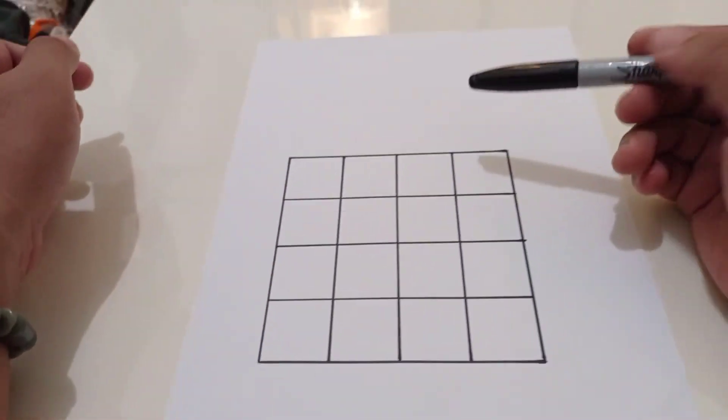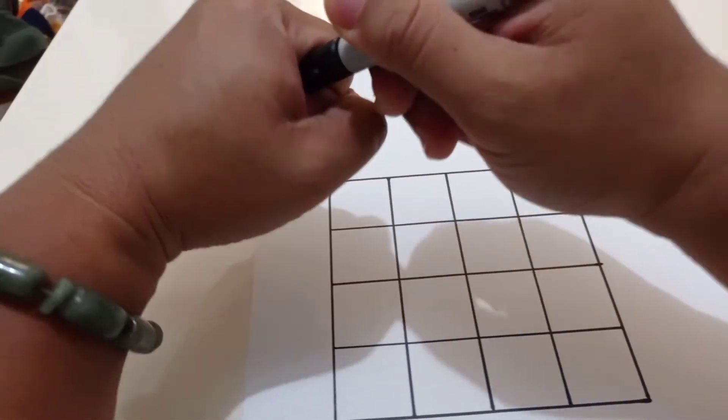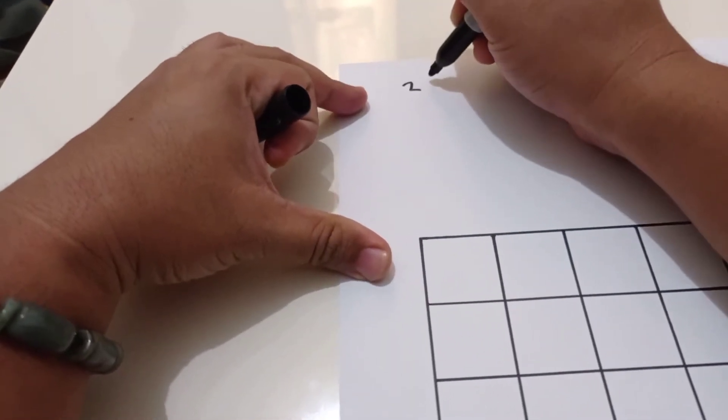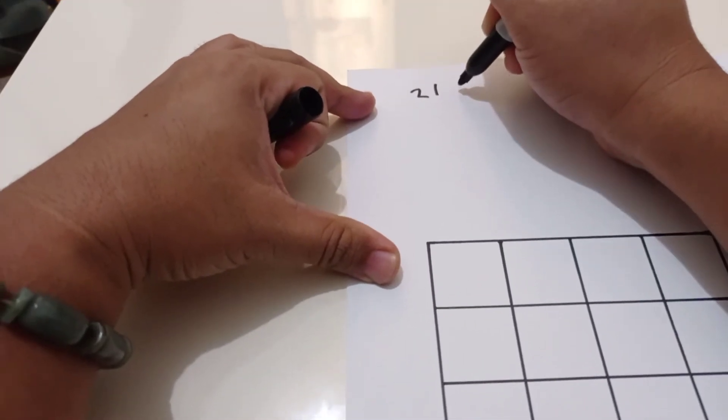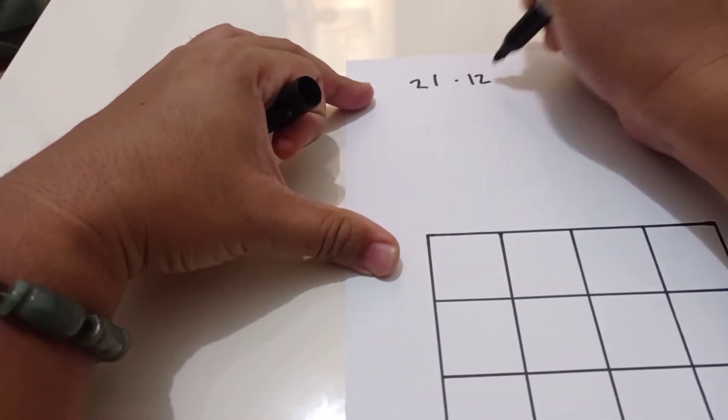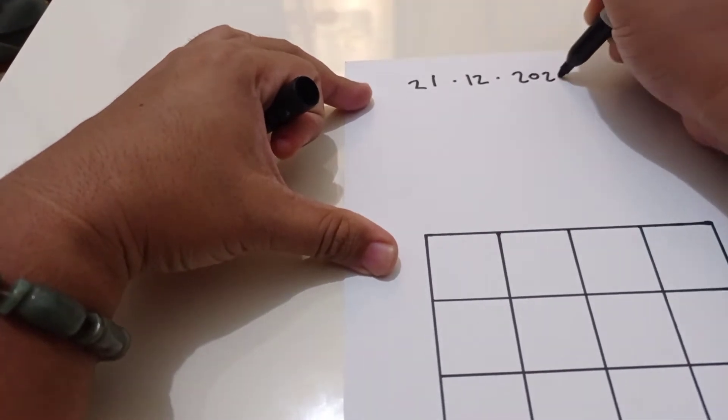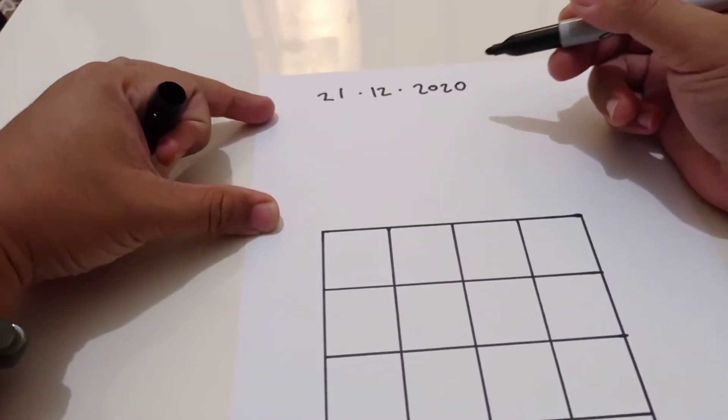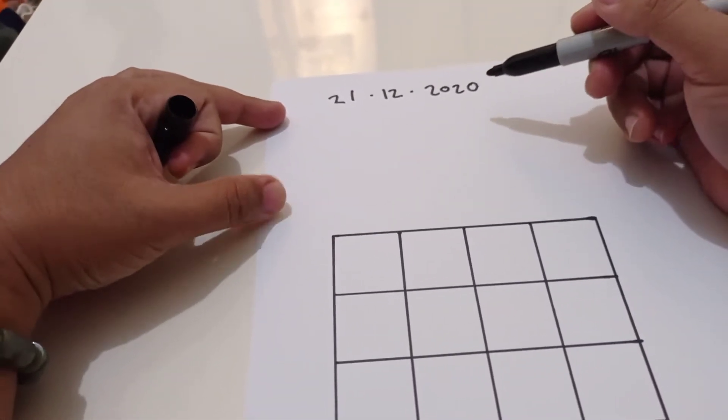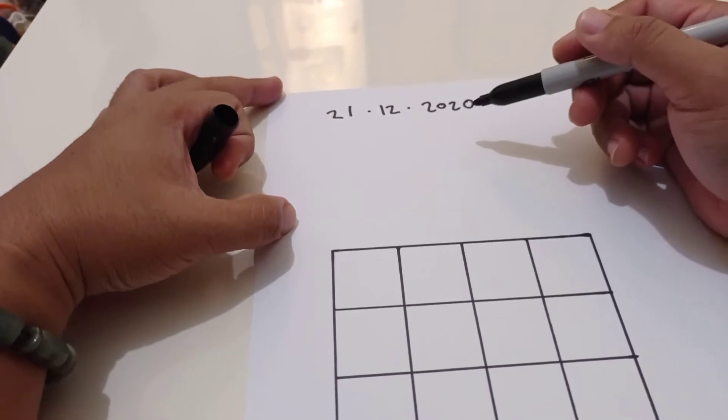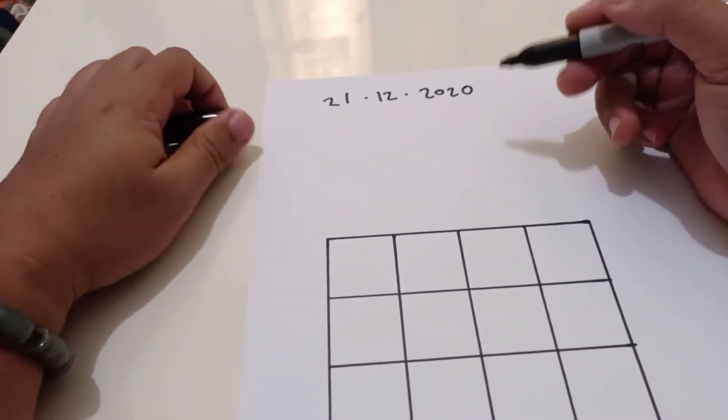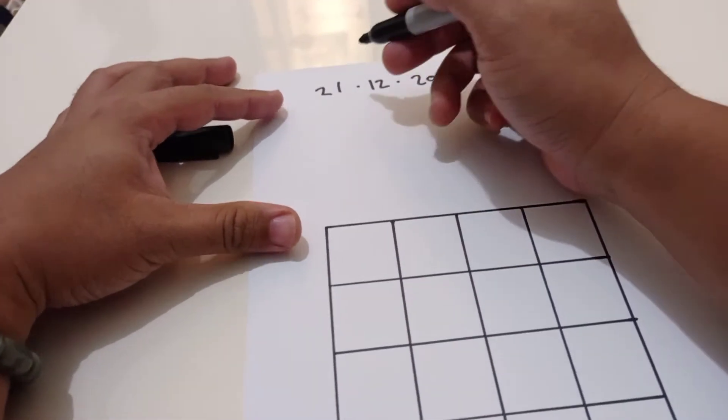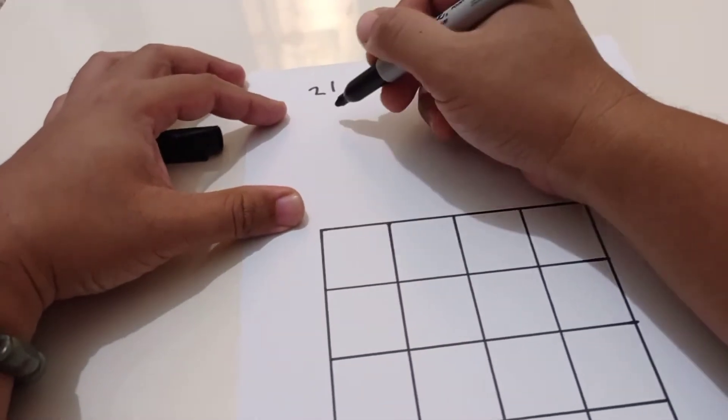So today is the 21st of December 2020, today is the birthday of Max Maven. Do you know how old is he today? That is why we play this game. For that I need the starting number by subtotal.